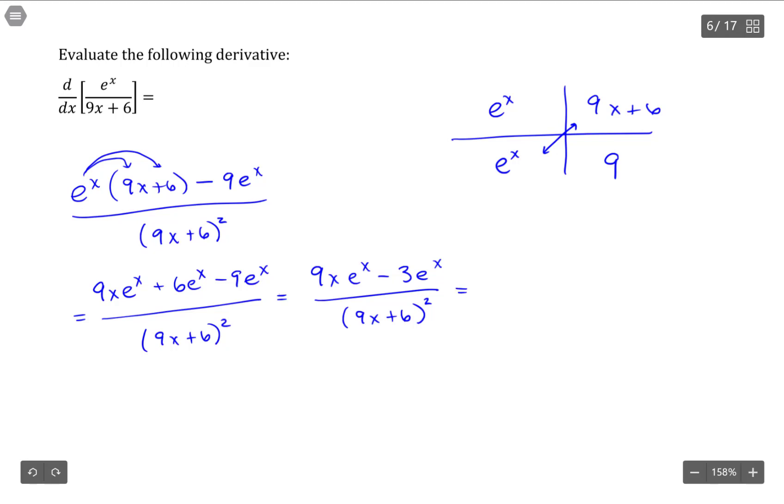I'll do this last step just so you see it. So this would give me 3e^x. Pulling out of these two terms, that leaves me 3x minus 1 all over (9x plus 6) quantity squared.